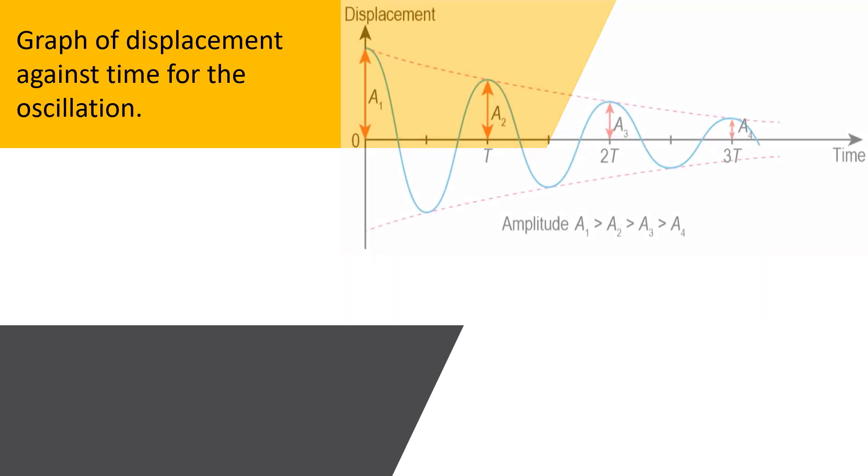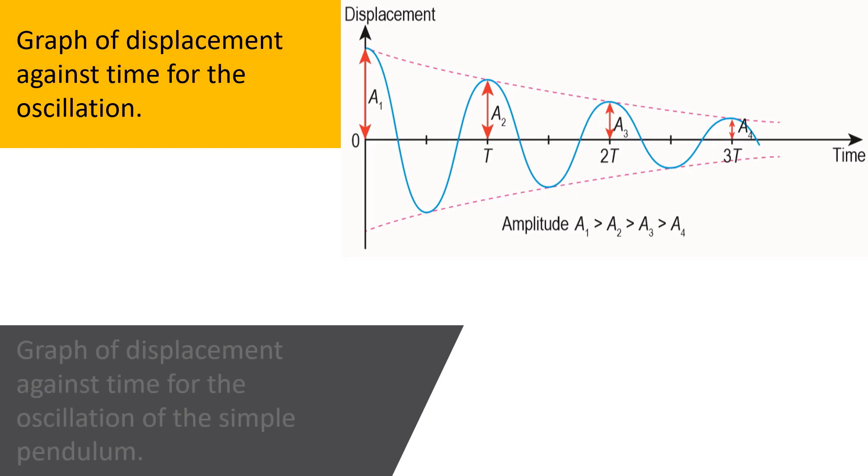Now we are looking at a graph of displacement against time for the oscillation. Look at the graph. What do you see? You observe that the amplitudes for the oscillation decrease with time. You can see the amplitude decreasing: amplitude A1, amplitude A2, A3, and A4. So T, 2T, and 3T - the period T, double the period 2T, and triple the period 3T.